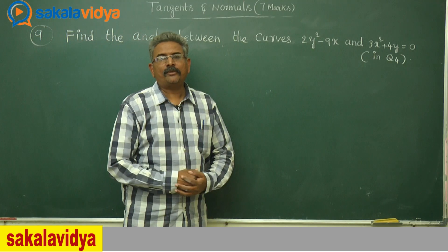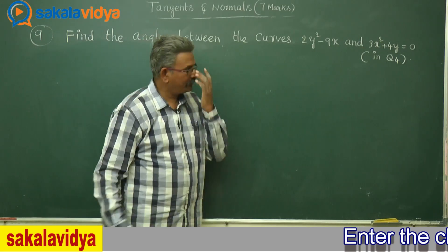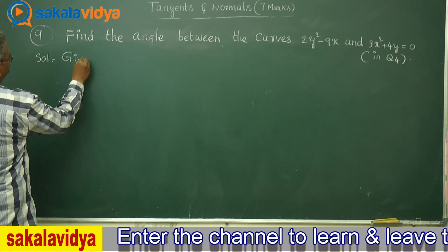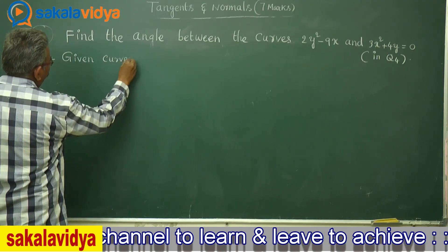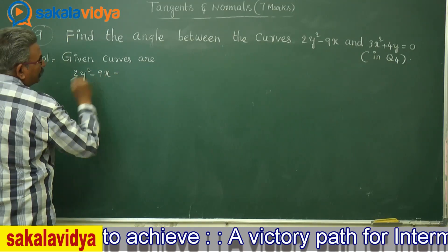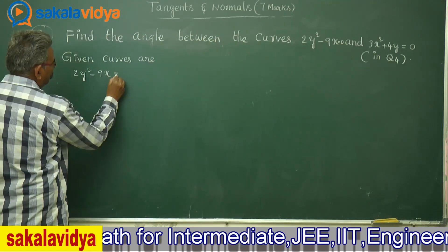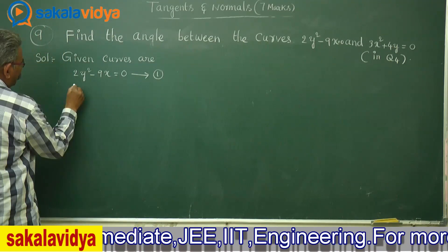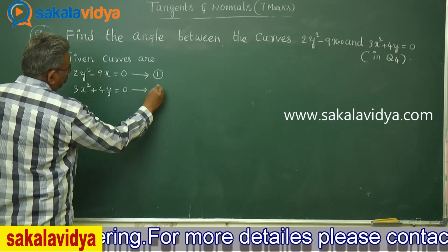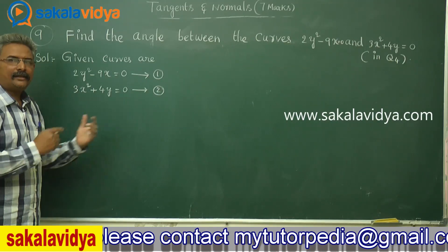One more problem. The problem is related to finding out the angle between the curves. First, let us solve the curves for the points of intersection. The given curves are 2y² minus 9x equal to 0 — equation 1 — and 3x² plus 4y equals to 0 — equation 2. From the first equation, let us write the x value in terms of y and substitute it in equation 2.